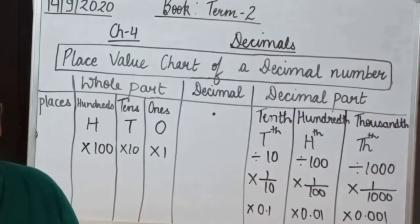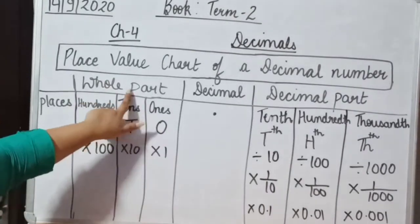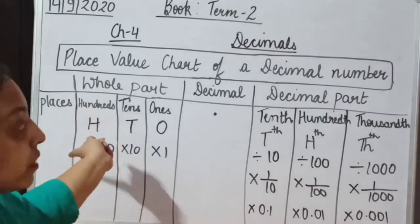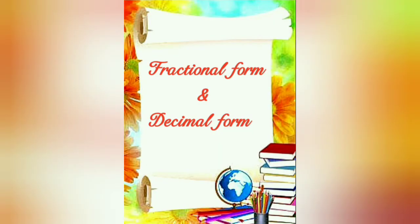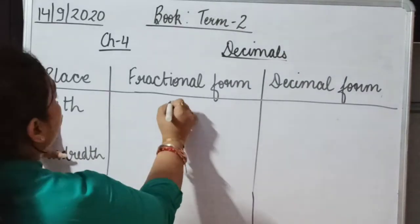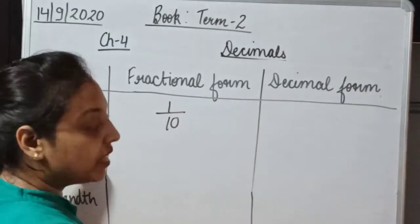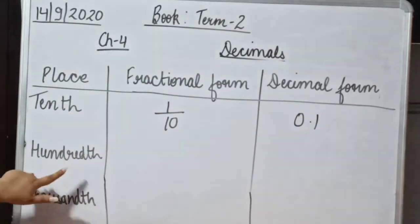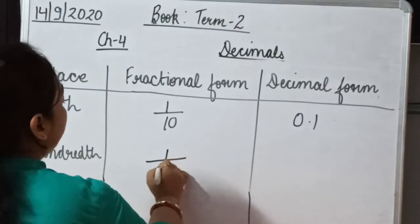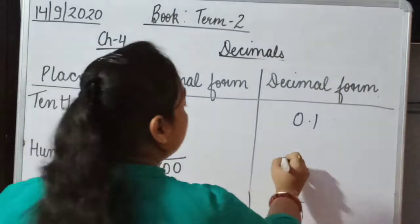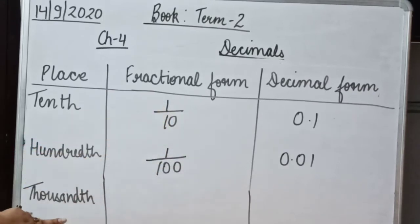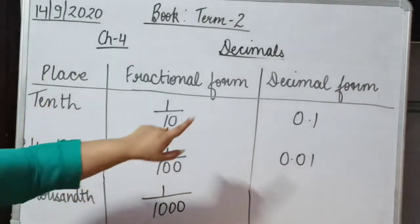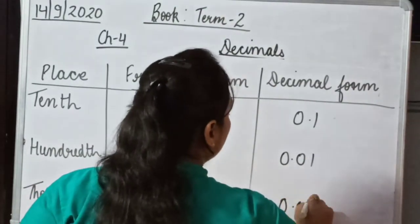In short, in this table we have studied the places of the whole part — ones, tens, hundreds — and the places of the decimal part — tenths, hundredths, and thousandths. The fractional form of the tenths place is 1/10, and its decimal form is 0.1. The fractional form of the hundredths place is 1/100, and its decimal form is 0.01. The fractional form of the thousandths place is 1/1000, and its decimal form is 0.001.